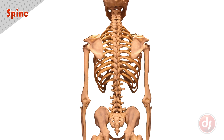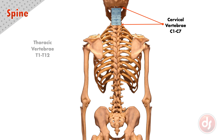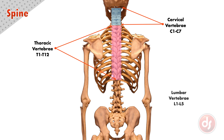Our spinal column is broken down into three sections. The neck section is called the cervical vertebra and there are seven, labeled C1 through C7. The section that our ribs attach to is the thoracic, and there are 12 vertebra numbered T1 through T12. The lowest section is the lumbar, with five vertebra named L1 through L5. The sacrum is a series of fused vertebra creating a solid attachment for the pelvis. At the very bottom is our tailbone, called the coccyx.